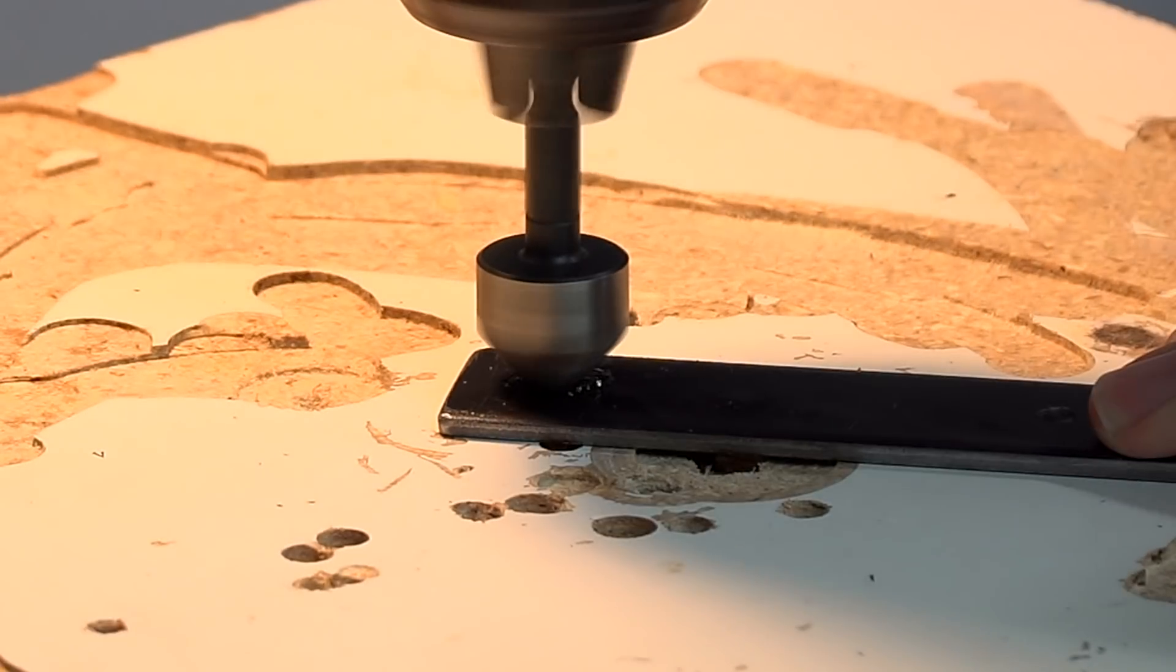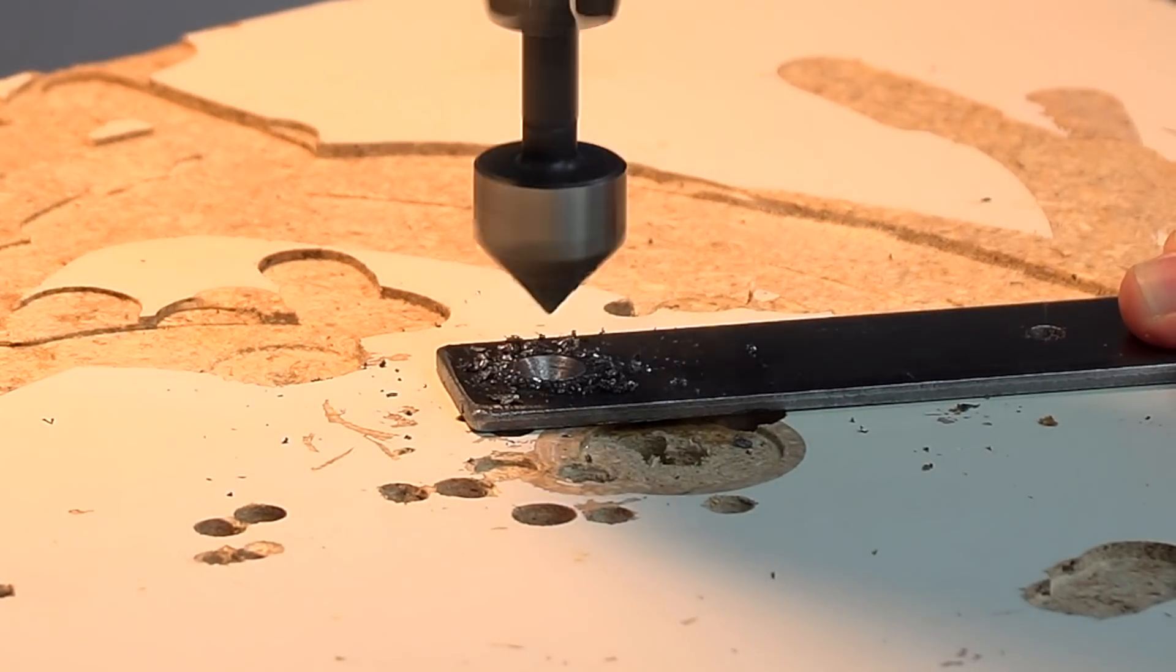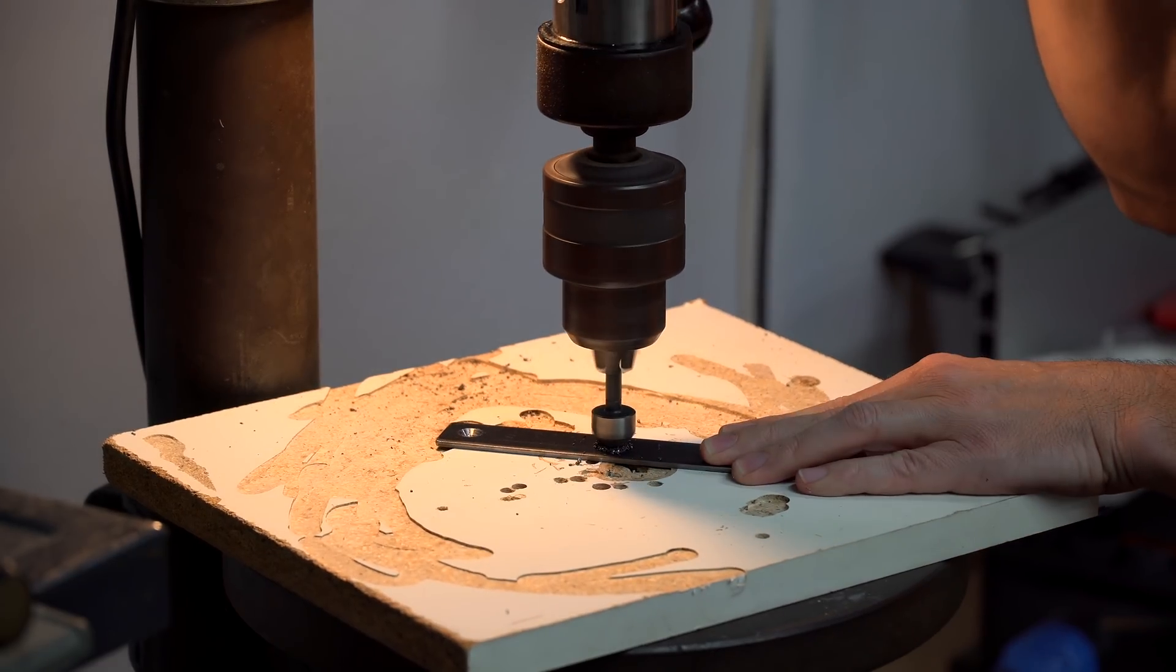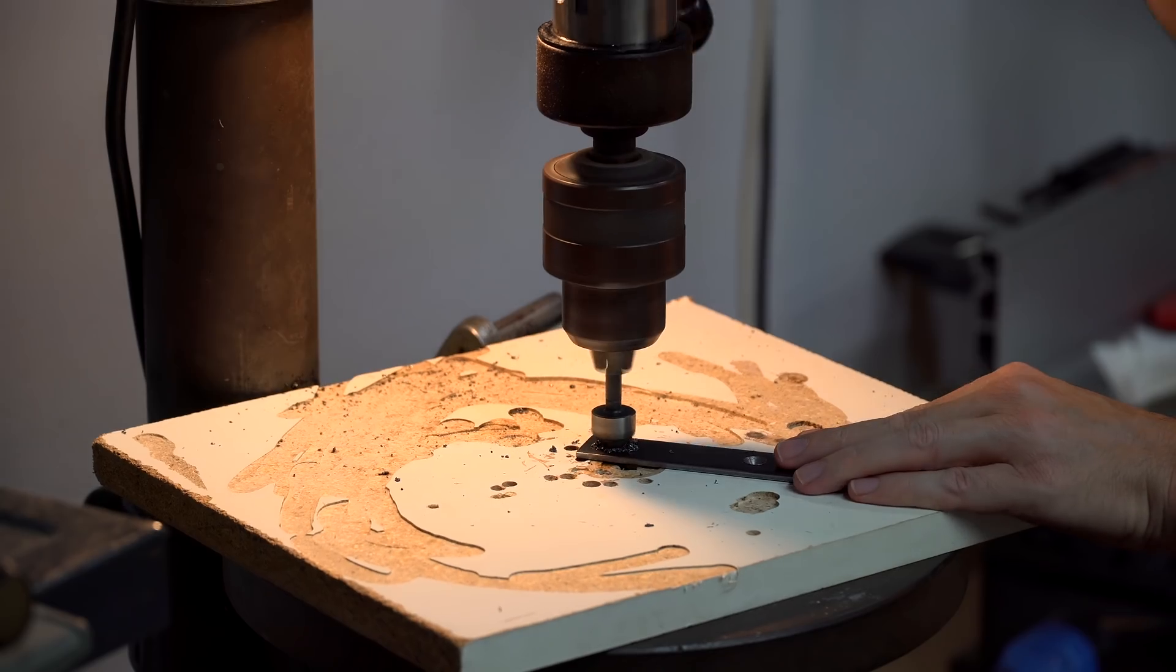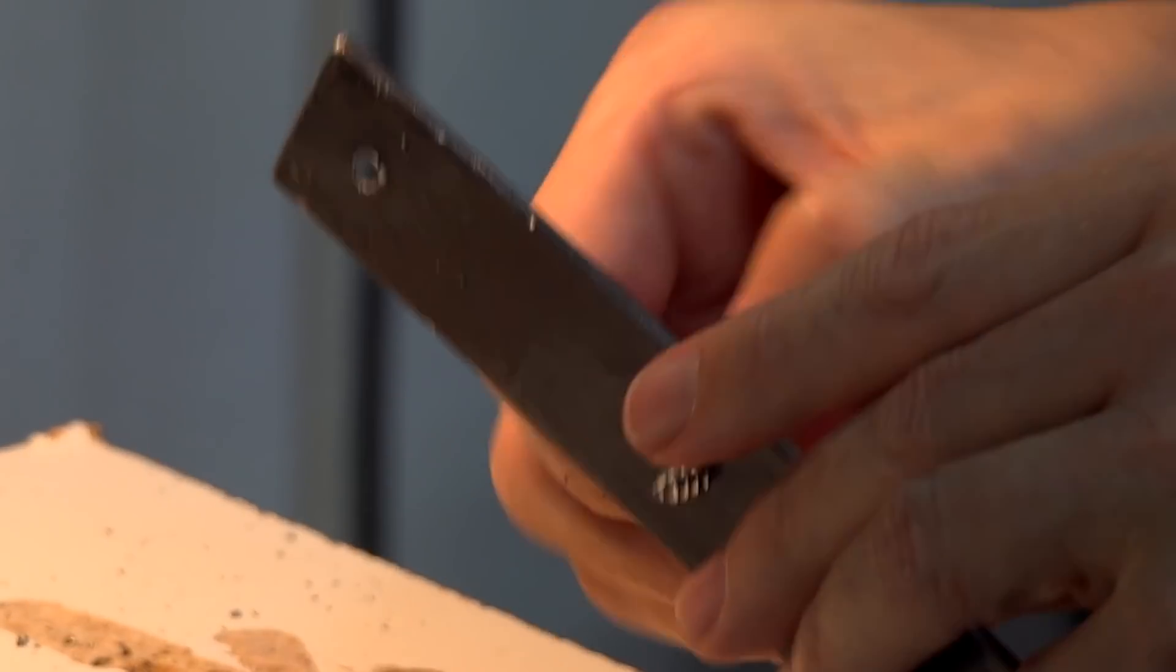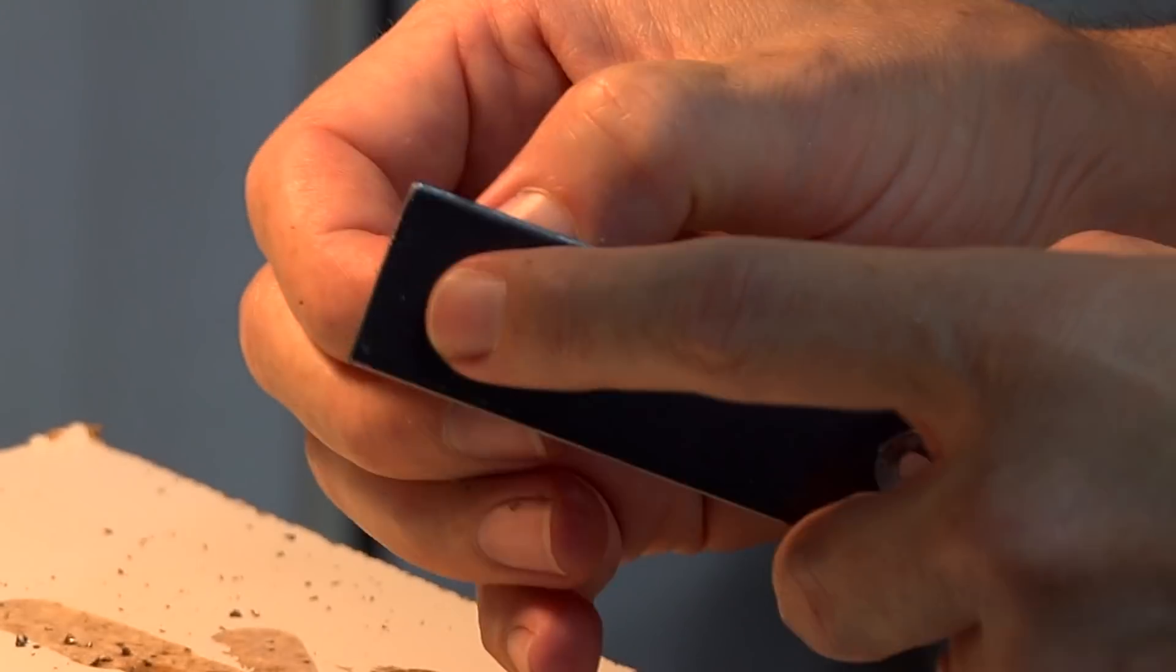After I drilled the through holes, I used a countersink bit to make sure that the heads of the screws were going to be recessed below the surface of the metal piece. Before moving forward, I just tested a screw in each one of the holes to make sure I liked the way it looked. The fit was good, so I kept going.